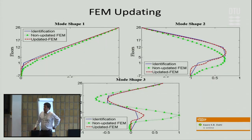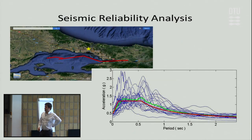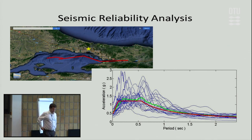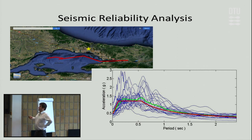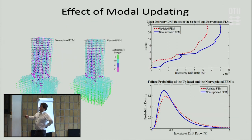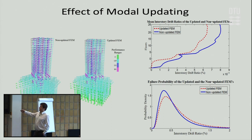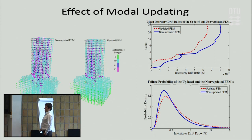The same applies to mode shapes. As a next step after updating, we do reliability analysis for the expected earthquake motion in Istanbul. There are three faults in the Marmara Sea, and we have the response spectra — both the mean and the design spectra. For updated and non-updated models, the failure probability density functions give different results. For example, if you set a threshold of one percent inter-story drift, the failure probability will be different for updated versus non-updated models.